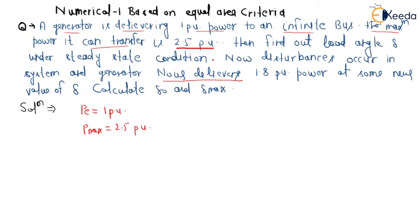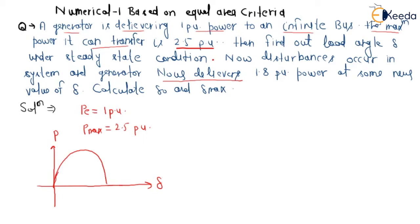Find out load angle delta under steady state condition. We know that under steady state condition — I am drawing the diagram. This is delta on the x-axis and p on the y-axis. We can draw p = p_max * sin(delta). Here p = p_max, starting from zero. This point is p_m0, which equals p_m0, and that value has been given as one per unit.